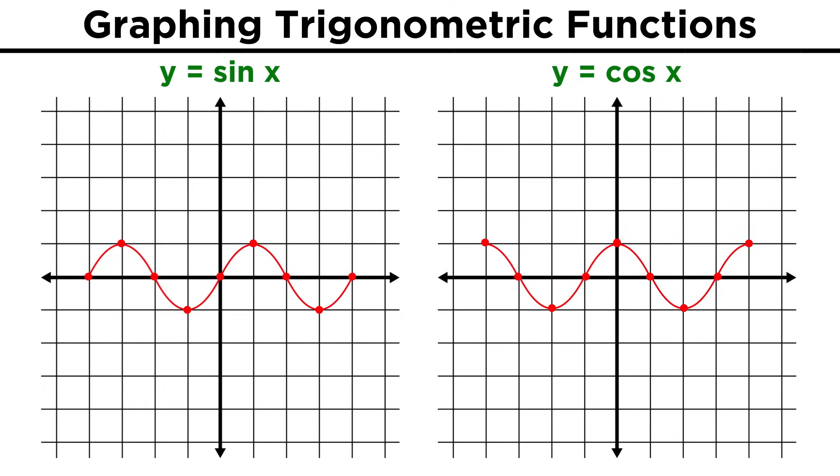So the graphs for sine and cosine are extremely similar, they are just slightly shifted, and all of the transformations we used for sine x will apply to cosine as well.